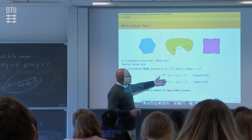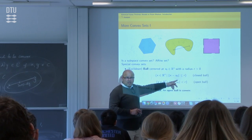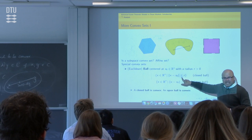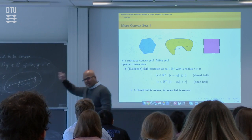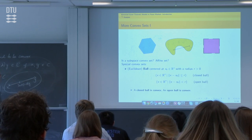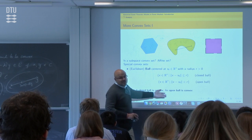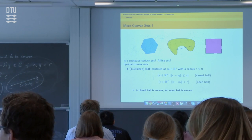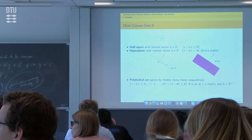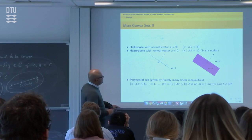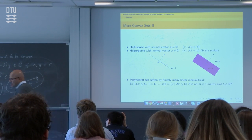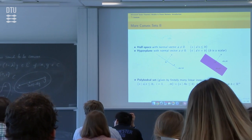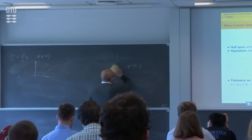A closed ball is a special convex set. The reason I use the term 'closed' is because the inequality is weak — the boundary (surface) of the ball is included in the set. A closed ball is convex, as is an open ball. If you have a ball where a portion of the boundary is in and a portion is out, things become more complicated.